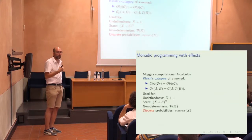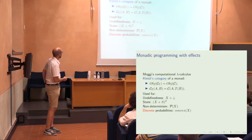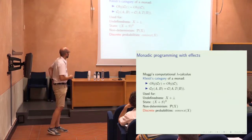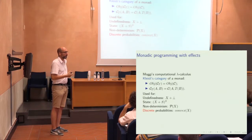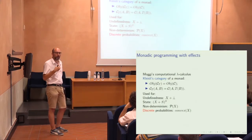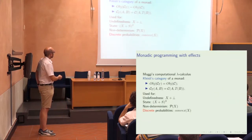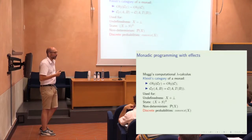Something very similar can be done with discrete probabilistic computations. This is the simplest way of doing probabilistic computations in a functional programming language like Haskell. The monad you take is formal convex combinations of your type X — elements from X annotated by a formal convex combination. In a programming language, you just add a construction for a biased coin flip with probability P between 0 and 1. These are the discrete probabilities, and you can do quite a lot with this.